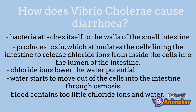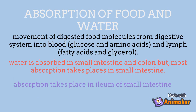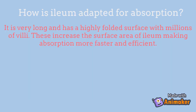This results in the blood containing too few chloride ions and water. Absorption involves the movement of digested food molecules from the digestive system into blood — glucose and amino acids — and into lymph, which carries fatty acids and glycerol. Water is absorbed in the small intestine and colon, but absorption mostly takes place in the ileum section of the small intestine.